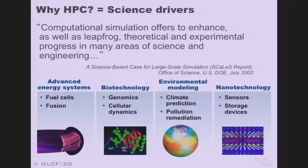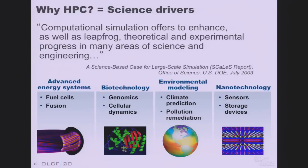Computational simulation offers us the ability to enhance as well as leapfrog theoretical and experimental progress in many areas of science and engineering — that's from the SCALES report from 2003. I think many of you had to read this for your CSGF application. All of the applications we represent here have need for computing, and many have need for high performance computing. A few examples: advanced energy systems such as fusion, biotechnology including genomics and cellular dynamics, environmental modeling such as climate prediction and pollution remediation, and nanotechnology and material science.